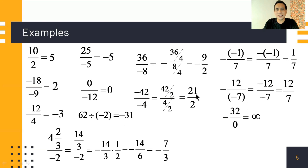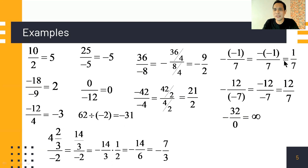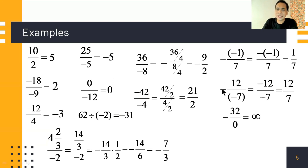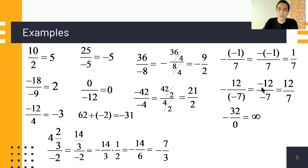For negative 42 divided by negative 4 equals 21 over 2 — check: 21 over 2 times negative 4 gives negative 84 divided by 2, which is negative 42, correct. For negative of negative 1 over 7 equals 1 over 7 — negative times negative is positive over 7. For negative 12 over negative 7 — same sign, so the final quotient is positive 12 over 7.